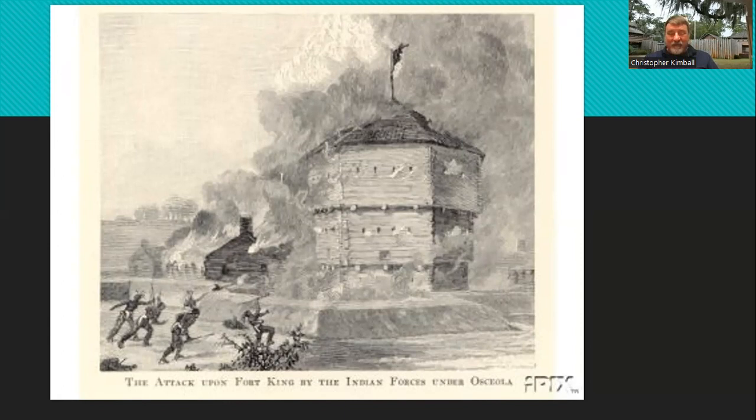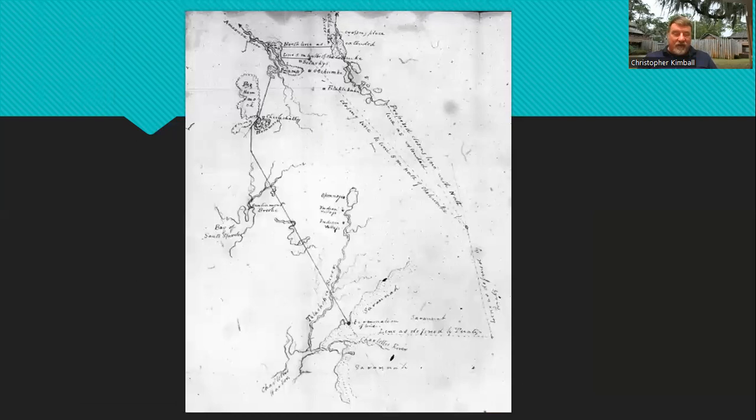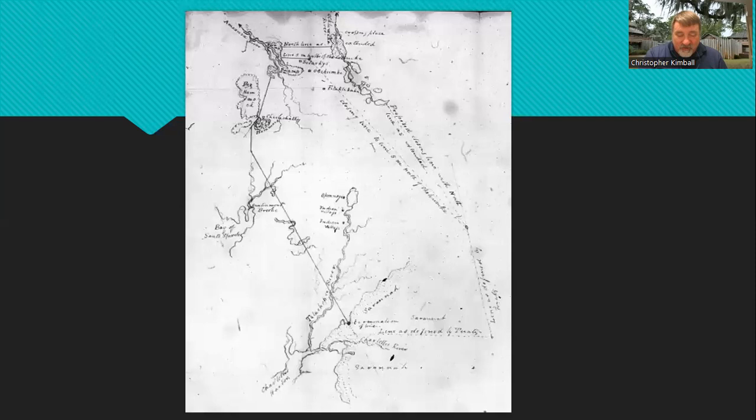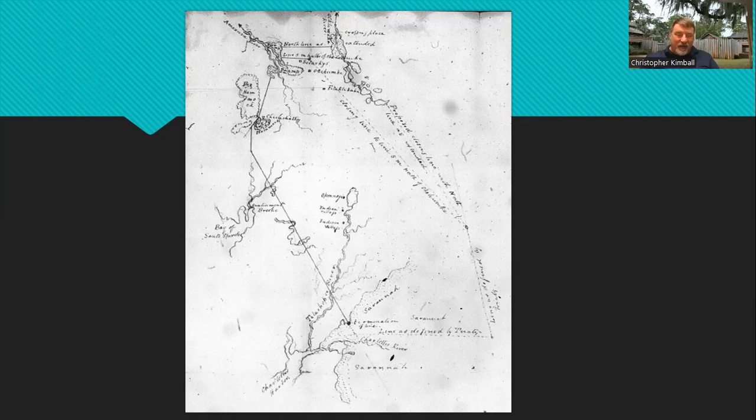The Treaty of Moultrie Creek in 1823 defined the Indian boundary or the Indian reservation boundary from south of what is today a Makanopi area on south to Charlotte Harbor. The borders were really undefined. They're putting a border over an area that really has never been surveyed 20 miles from the coast.